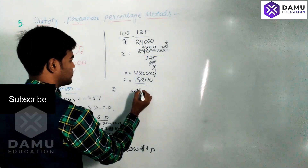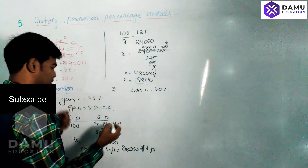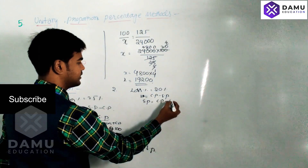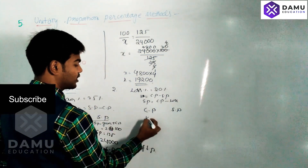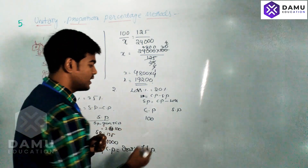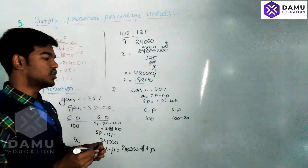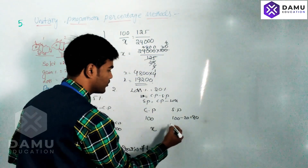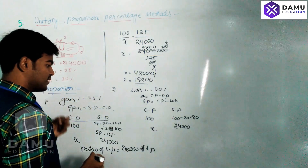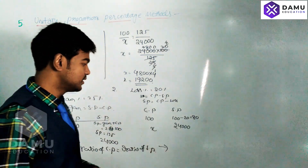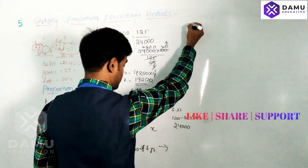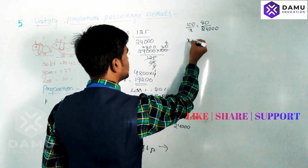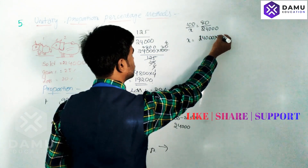For the second block, the loss percentage is 20%. Loss equals CP minus SP, so SP equals CP minus loss. If cost price is 100, then selling price is 100 minus 20 equals 80 rupees. Taking X as the cost price for the second block where selling price is 24,000, the ratio of cost price equals ratio of selling price: 100 divided by X equals 80 divided by 24,000. So X equals 24,000 multiplied by 100 divided by 80.